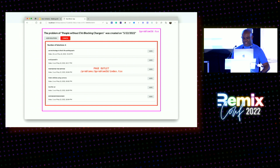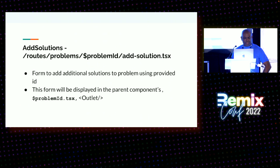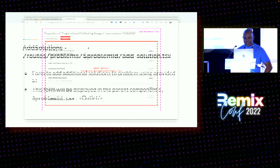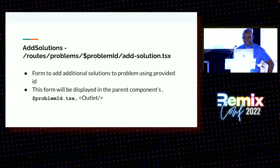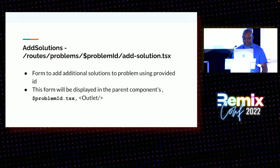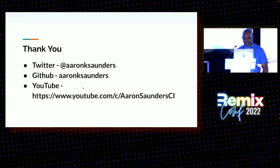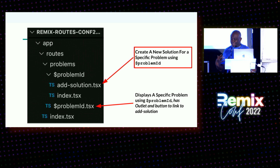That's what this diagram shows — with the pink around the outside and the default index.tsx being rendered with the solutions. The last thing to show is add-solutions.tsx, which is driven from clicking the Add Solutions button in the wrapper. When I click that link it renders this route. Because add-solutions is inside the folder problems/problemID, it gets rendered inside that same outlet. The diagram confirms: problemID has the outlet, I link the button to add solution, and since add-solutions is inside this directory, it gets rendered in that outlet. And that's kind of everything.